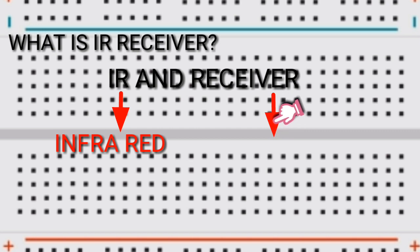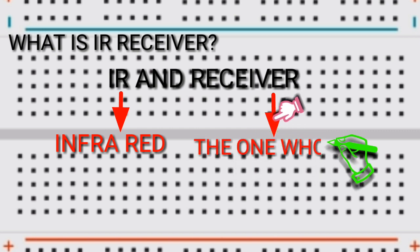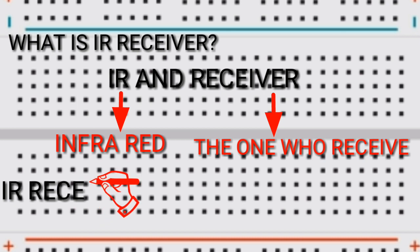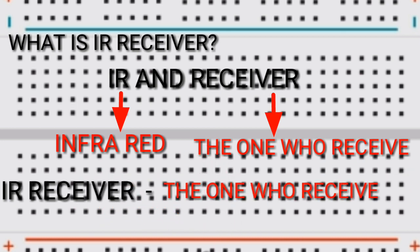The receiver is the one who receives. Let's combine the two words: IR receiver simply means the one who receives the infrared light.